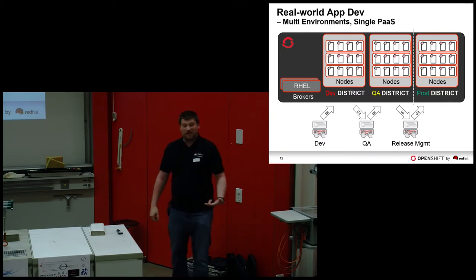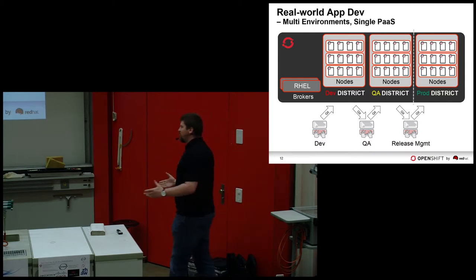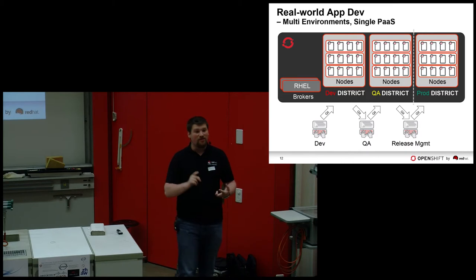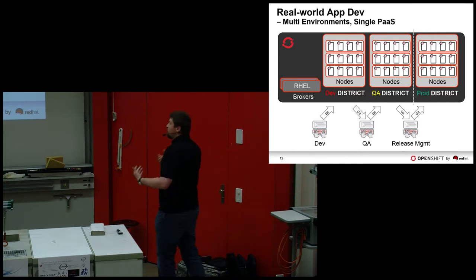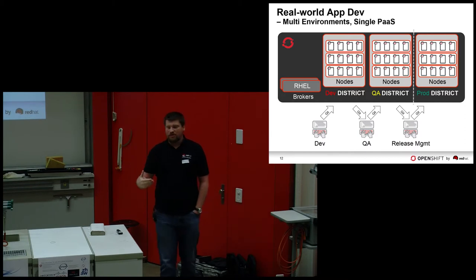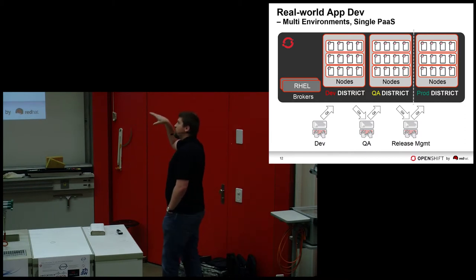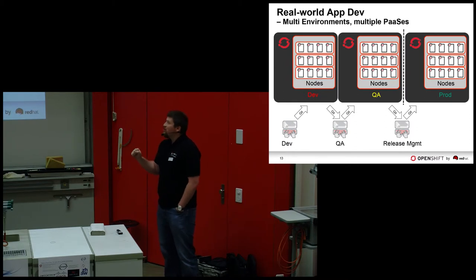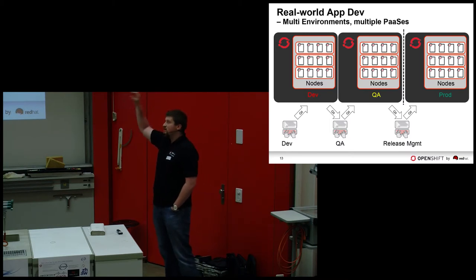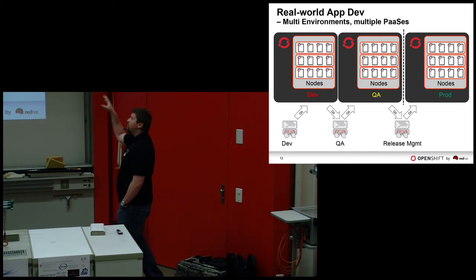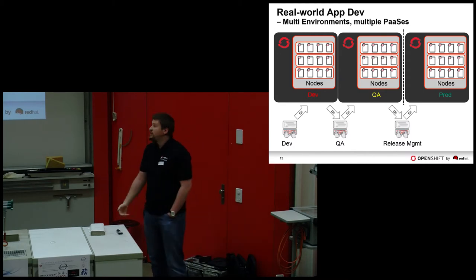In real-world deployments you need at least three different versions of your application — usually QA, development, and production. There are two ways to handle this: first, you have one PaaS deployment with different nodes providing different versions and you move applications between nodes inside one OpenShift deployment. Or you have three separate OpenShift deployments, each with different SLAs and KPIs, and you move the application through the lifecycle from one to the other to accommodate the needs of each environment.